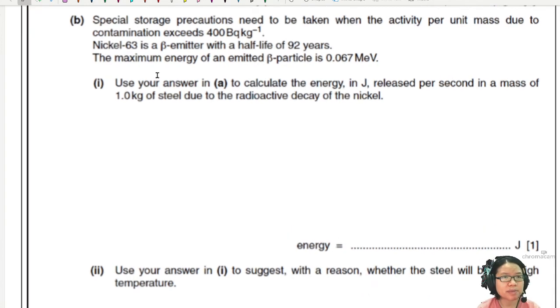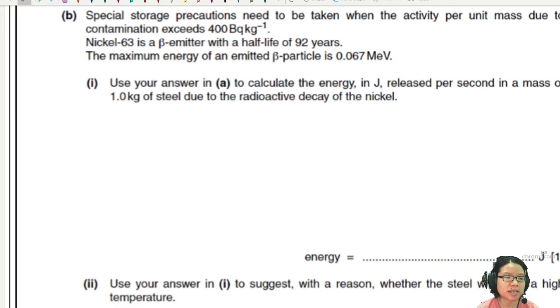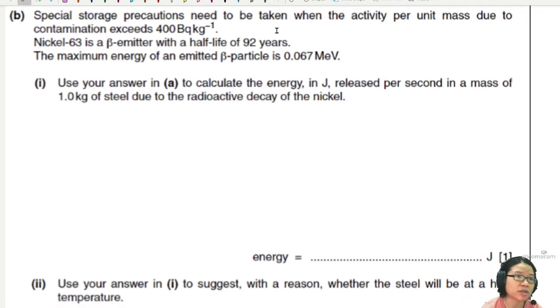Talking about particles, of course, a lot. Part B. Special storage precautions need to be taken when the activity per unit mass due to contamination exceeds 400 becquerel per kg. Nickel-63 is a beta emitter. The half-life is 92 years. Wow, so long. Maximum energy of an emitted beta particle is 0.067 mega eV. So this is per reaction. And we say per reaction, this means it is per nucleus.